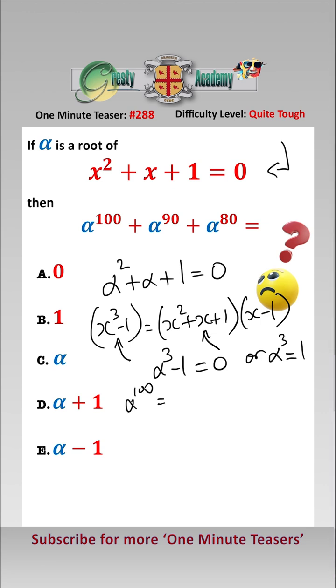Now alpha to the 100 is equal to alpha cubed to the 33 times alpha and alpha cubed is 1, so that equals alpha.